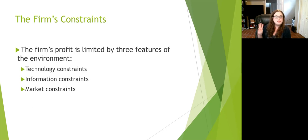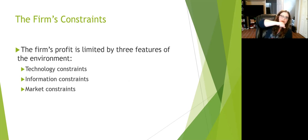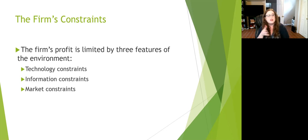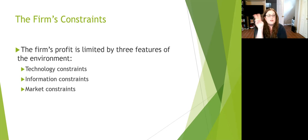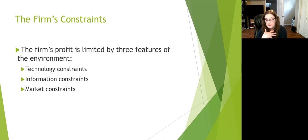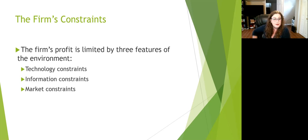A firm's profit is limited by three features of the environment. First: technology constraints — it'd be cool if pizzas built themselves at 500 an hour, but if I don't have the technology, it isn't happening. Maybe I need workers to put pepperoni and sauce on the pizza. Second: information constraints — maybe I don't really know what my market wants. Do you all really want $10 pizzas in Edwardsville, and are those the flavors you want? Third: market constraints — what do people actually want, how much are they demanding, and what does the demand curve look like?